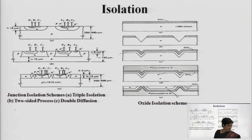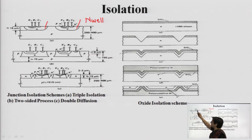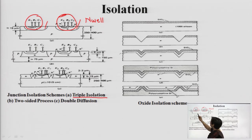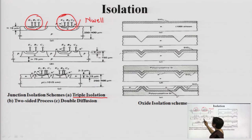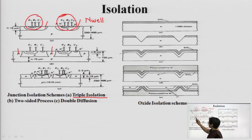In the MESA isolation technique, you have a P substrate with two N wells being formed. These N wells isolate the devices, and then individual bipolar junction transistors are fabricated within them. This is basically a triple isolation technique where two different wells are first formed and then individual devices are fabricated within those wells.